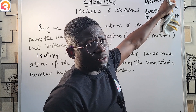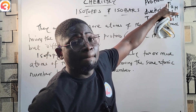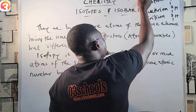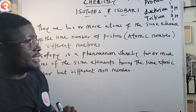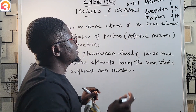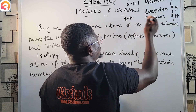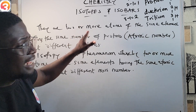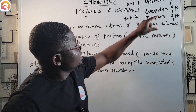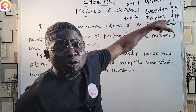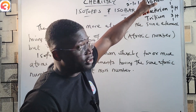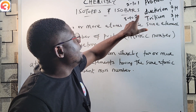The number of neutrons equals mass number minus atomic number. So a protium atom has 1 minus 1 = 0 neutrons — no neutron at all. A deuterium atom has 2 minus 1 = 1 neutron. A tritium atom has 3 minus 1 = 2 neutrons.